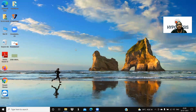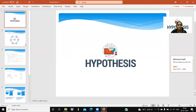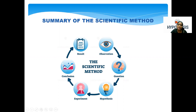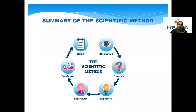Let me start with a summary of the scientific method. Scientific method starts with an observation. Then we'll be asking questions like what, why, how to define the problem. The next step is hypothesis, which is the point we are going to discuss in detail. This is followed by conduct of an experiment, then we'll draw conclusions, and eventually we'll publish the result.